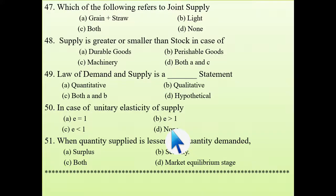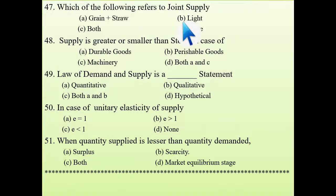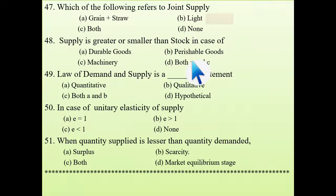Next: which of the following refers to joint supply? The options are grain, straw, light, both, or none. The answer is light, because light is used for various purposes, making it a joint supply.